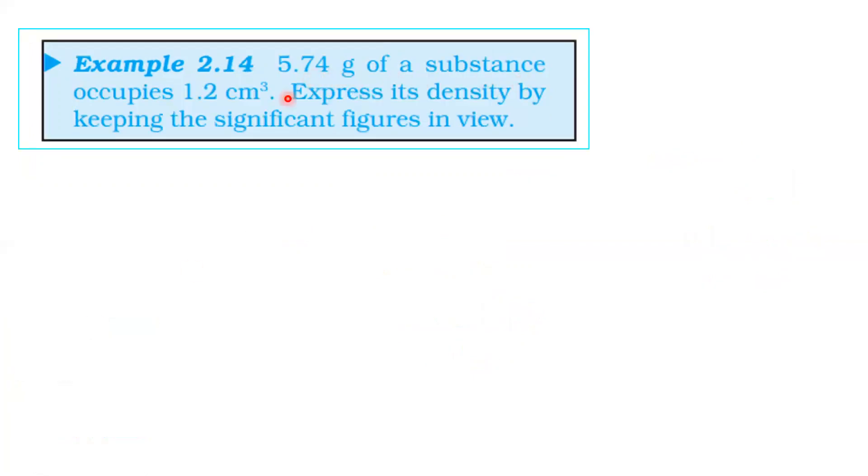Next question. 5.74 grams of a substance occupies 1.2 centimeter cubed. Express its density by keeping the significant figures in view. If the mass is 5.74, then the volume is 1.2 centimeter cubed. The density equals mass by volume. Then the mass is 5.74 divided by volume. The volume is 1.2 centimeter cubed. The mass is 4.78 grams per centimeter cubed. The mass is 3 significant. The volume is 2 significant. The answer is 2 significant.